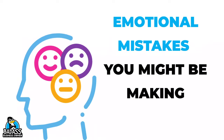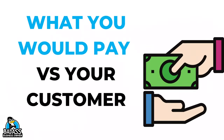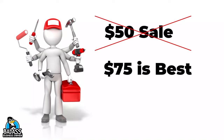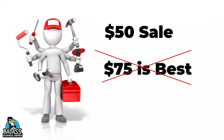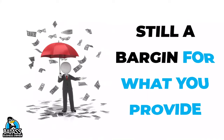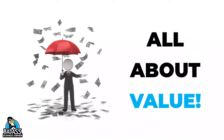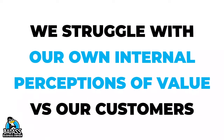The fifth pricing mistake — and these next couple are more emotional — is setting your prices based off of what you would be willing to pay versus what your ideal customer will pay. For example, if you have a service-based business and you're charging $50 but know you probably should be at $75, what happens is you personally feel uncomfortable paying $75, so you never raise your prices. However, your customers may live in a more affluent neighborhood and make more money than you do. To them, $75 is still a screaming bargain. Way too many small business owners struggle with their own internal perception of value versus what their customer's perception of value is.